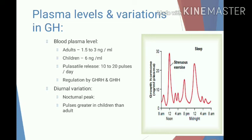Regarding diurnal variation in growth hormone secretion, the nocturnal peak of growth hormone occurs 1 to 2 hours after deep sleep. Pulses are greater in children than in adults. From birth to early childhood, plasma growth hormone level increases progressively. At puberty it is associated with the peak period of plasma growth hormone level, and with increasing age there is a decrease in growth hormone secretion in response to GHRH and other stimuli.